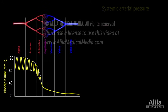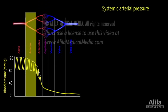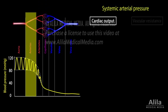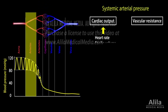A person's blood pressure, or systemic arterial pressure, is the pressure measured in larger arteries. It is directly proportional to cardiac output and vascular resistance. Blood pressure is typically regulated by changing heart rate, stroke volume, blood volume, or vessel radius.